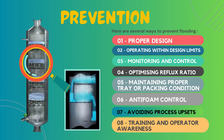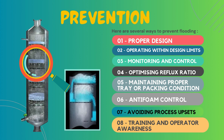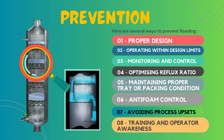The last measure to prevent flooding is having proper training and operator awareness. It is our duty to provide comprehensive training to operators on the operation and maintenance of the distillation column. We need to ensure that operators are aware of the factors that can contribute to flooding and are empowered to take corrective actions promptly if flooding occurs. By implementing these preventive measures and maintaining monitoring and control, it is possible to minimize the risk of flooding and ensure efficient and safe operation.